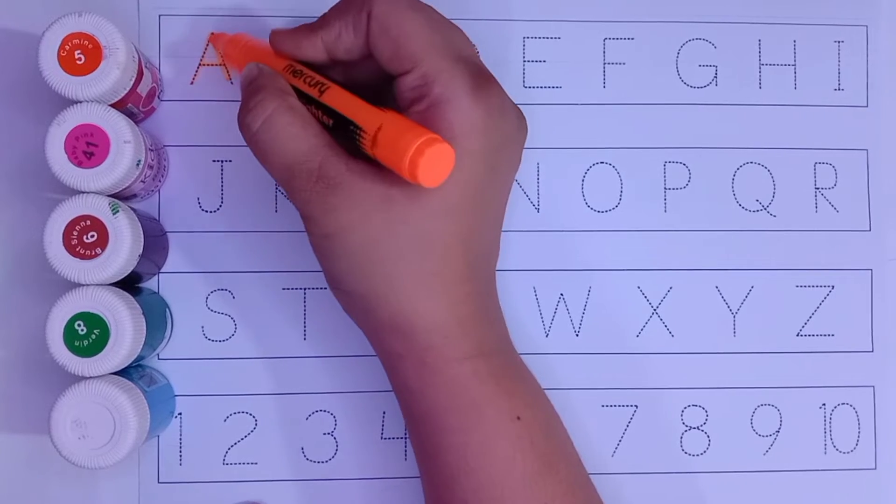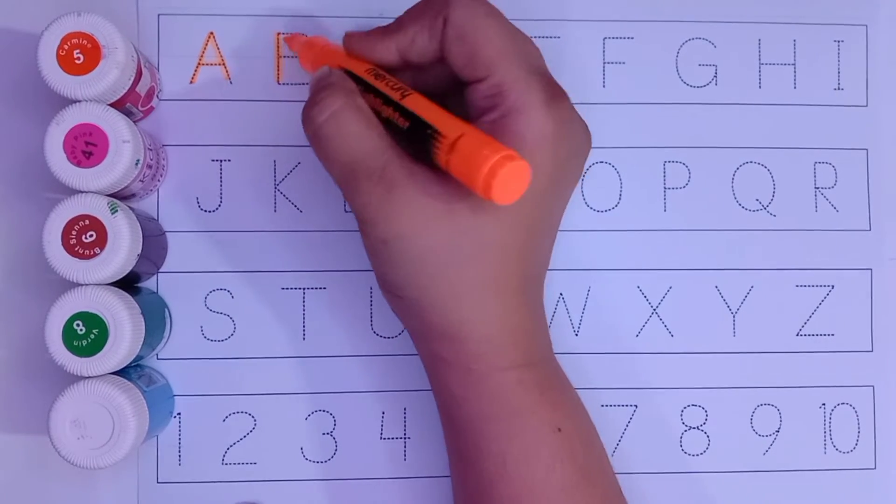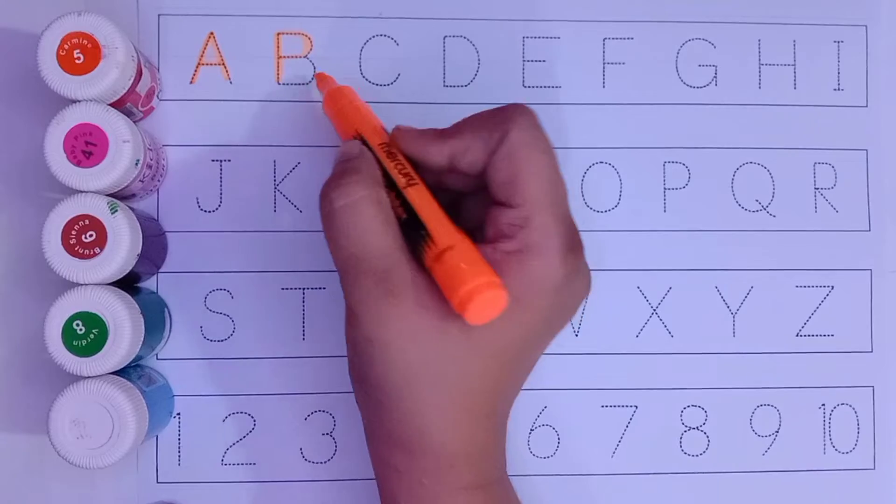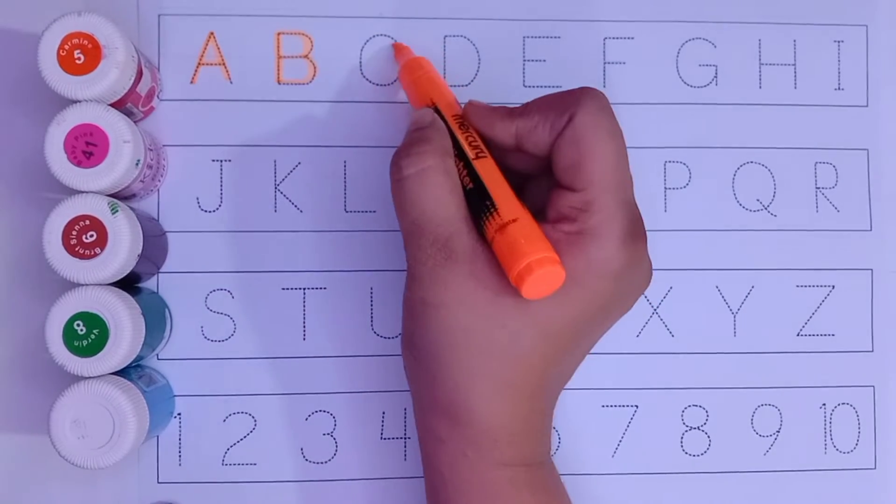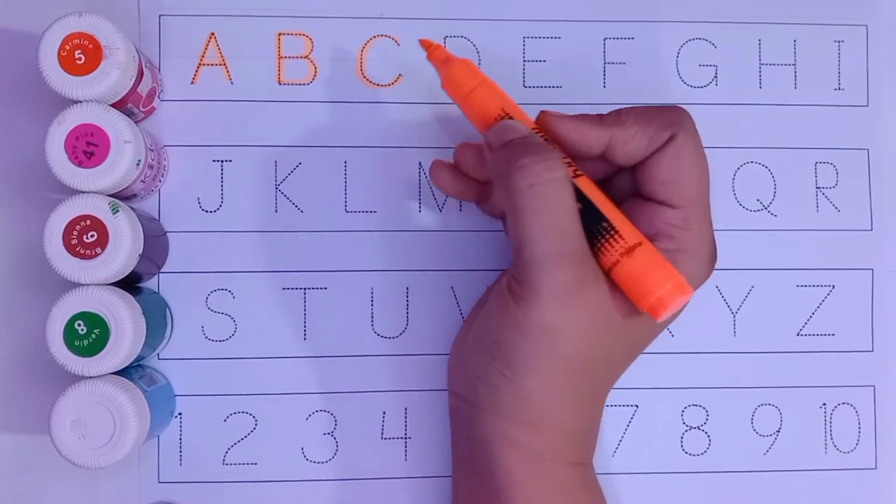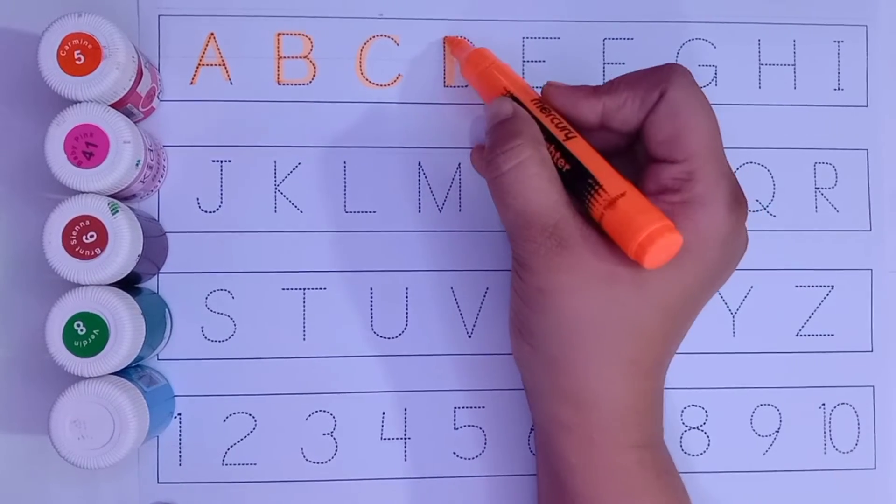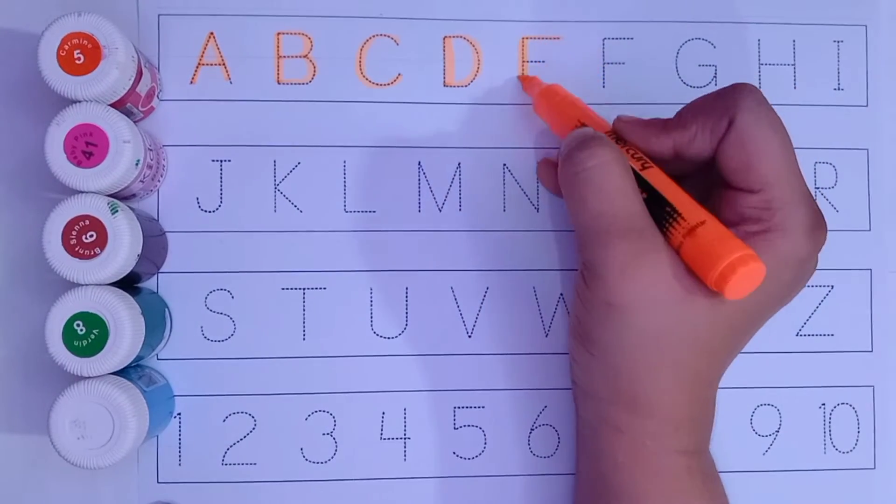A. A for apricot. B. B for balloon. C. C for circle. D. D for dinosaur.